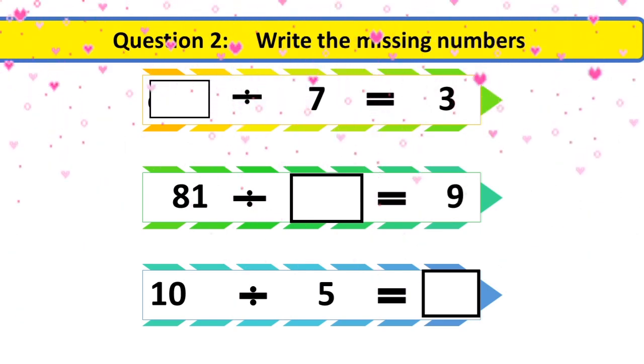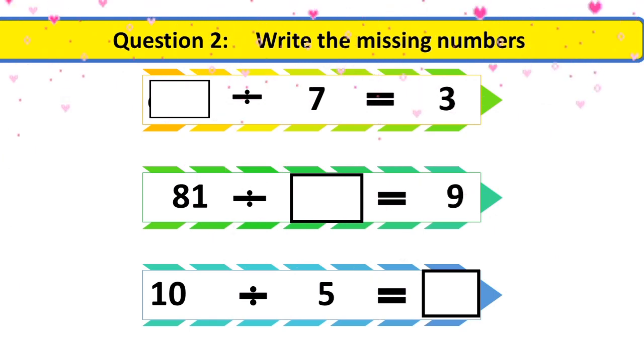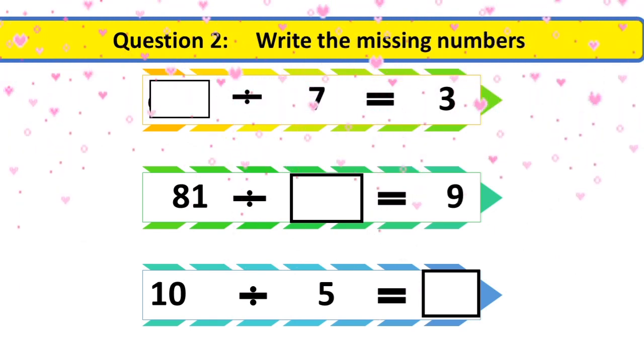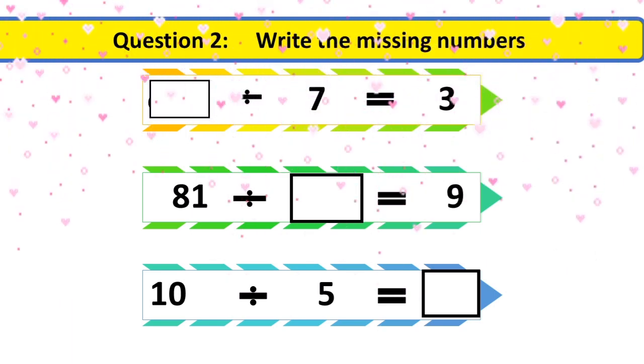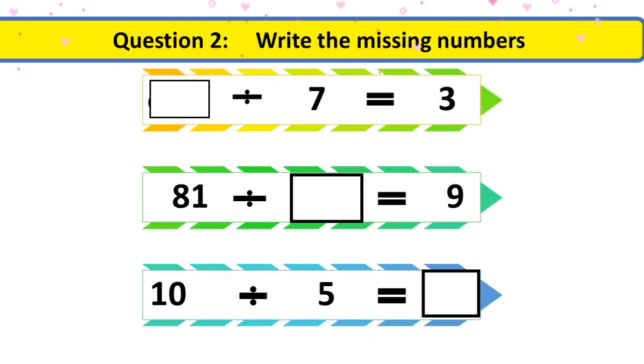Look at here. The first equation: the first number is missing divided by 7 equals 3. You know division is related to multiplication, so simply you are going to multiply 7 by 3. 7 ones are 7, 7 twos are 14, and 7 threes are 21. Yes, so it means that here you are going to write 21.